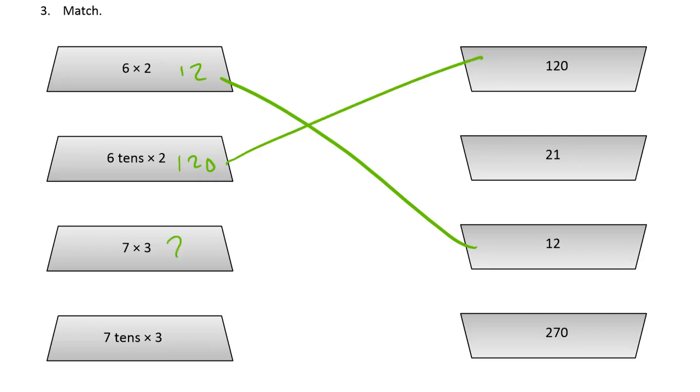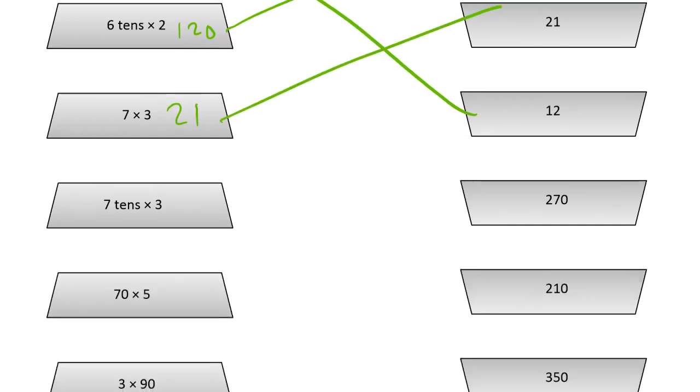Seven times three is twenty-one. There's the twenty-one. And if we're talking about tens, then we're going to have seven tens. That's going to be two hundred ten. And that's over here.